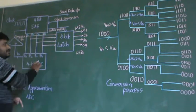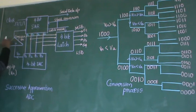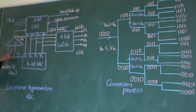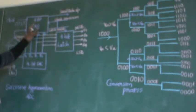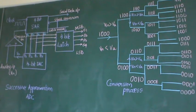Along with these three components, we are also using the comparator. I hope you are familiar with the comparator, because we already discussed it with the flash ADC. The comparator has a positive terminal and a negative terminal. So these are the 4 blocks: comparator, SAR, DAC, and LATCH — the 4 important blocks required to construct this ADC.